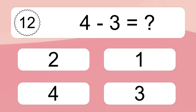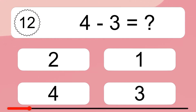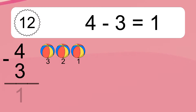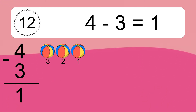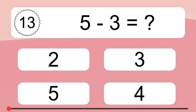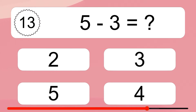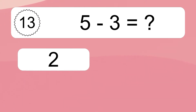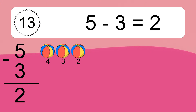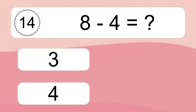4 minus 3 equals what? 4 minus 3 equals 1. Let's count it: 3, 2, 1. 5 minus 3 equals what? 5 minus 3 equals 2. Let's count it: 4, 3, 2.